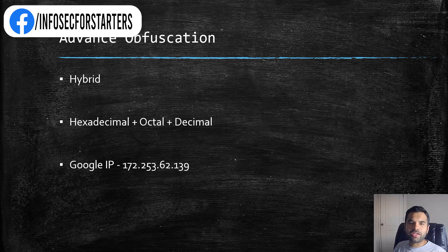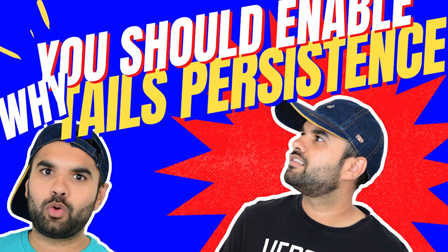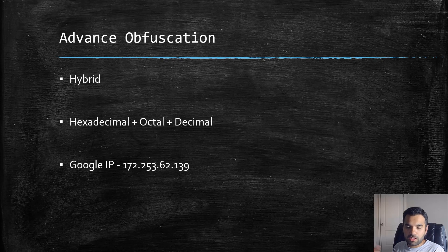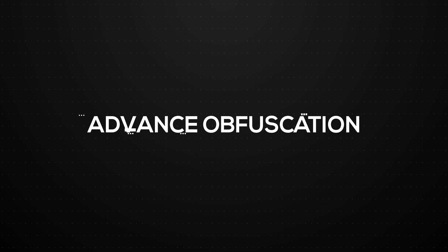Hi everyone, welcome back to Cyber Security TV. In our previous episode we saw how you can hide or obfuscate the hostname, aka IP address, when you are phishing someone using various number conversion systems like hexadecimal, octal, and decimal. Today we are going to see some more variations, like how you can use a hybrid approach combining all of them at once.